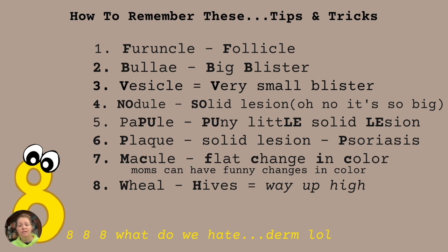B for bullae — remember B is for big blister, so bullae is the bigger fluid-filled lesion of the two. Then vesicle — remember V for very, very small fluid-filled blister. And then nodule, which is a solid lesion. I put in bold the NO in nodule and the SON in solid, so you can remember 'oh no, it's so big' — this is the larger solid lesion. That's our nodule. And then papule — I put in bold the PU in papule, the PU in puny, and the LE in little and lesion. So papule: puny little solid lesion.